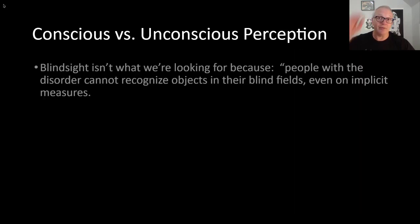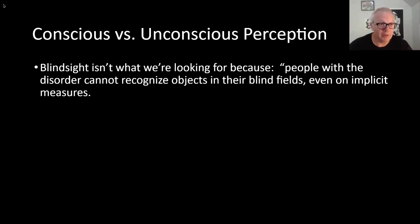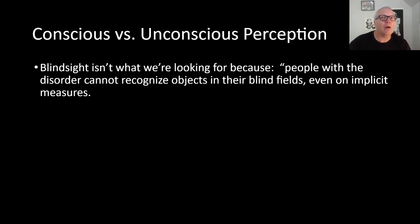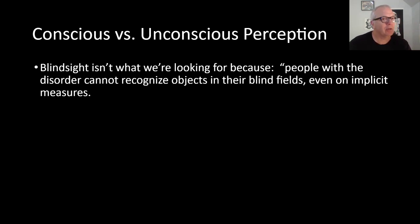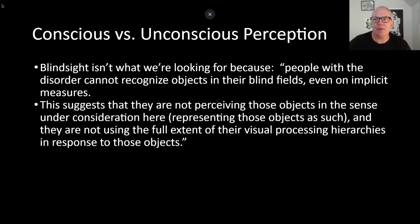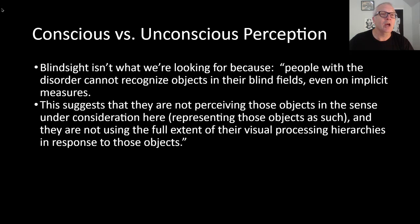Prinz says this is not the sort of case he's after. Blindsight isn't the kind of empirical research we're after, because we're trying to locate and identify attention and representation at various levels. He says people with this disorder cannot recognize objects in their blind fields even on implicit measures. We're after figuring out what consciousness is at a higher level — what is it to recognize that an object is an object? Blindsight doesn't give us that. This guy is clearly registering something at some low level, but he can't report on it and he's not processing the object as an object. We need a condition in which objects are in fact recognized in the absence of consciousness.